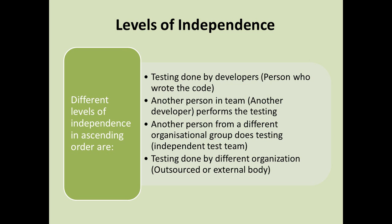The next level is when another developer in the team performs the testing. For example, developer A develops something and developer B performs testing of that code. That is a slightly higher level of independence, but since both are developers, developer B would still not be able to find as many defects as a tester, because both developers have a similar mindset of constructing or creating software rather than breaking it.